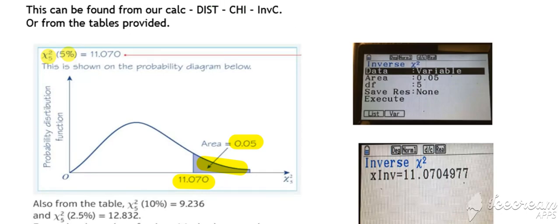Alternatively, you could pick it up from your calculator. If you go into distribution, chi, and then inverse, this will take you to this screen. You put in your area of 0.05, degrees of freedom of 5, and it will return your critical value for that chi-squared distribution.